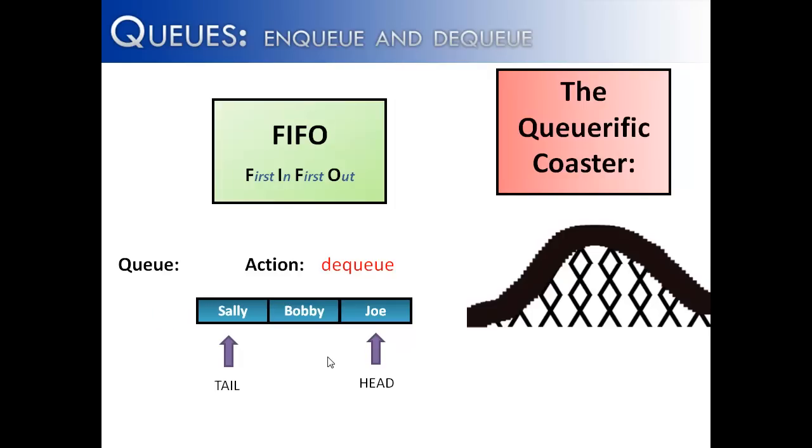Then Joe, I want you to notice that this action, instead of enqueue, is called dequeue. As you remove someone or something from a queue, you are dequeuing that item. Then Bobby goes, and finally Sally is going to go, because she was the last person to enter the line.